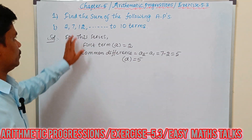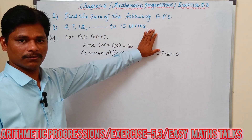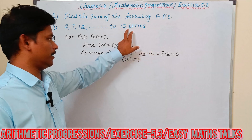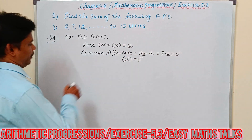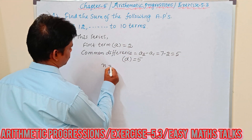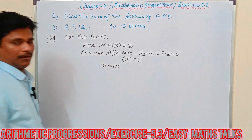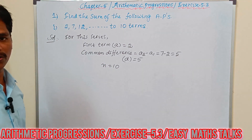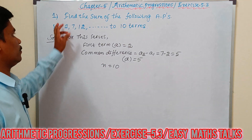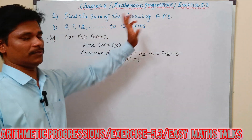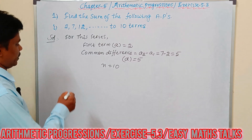In this series, up to 10 terms. So n is given: n = 10. Now find out the sum of the AP.